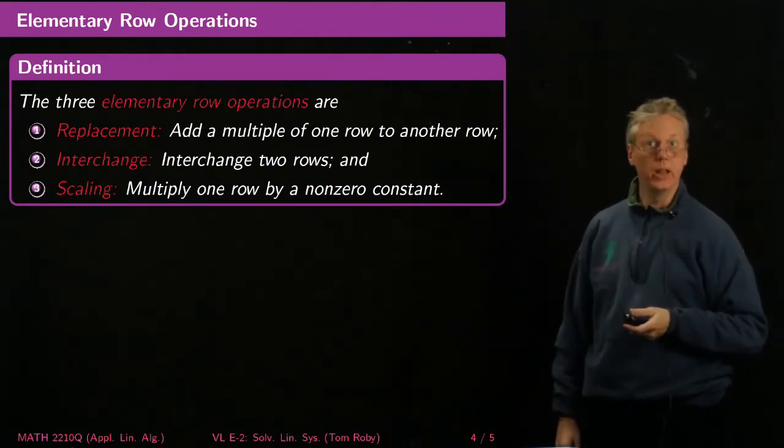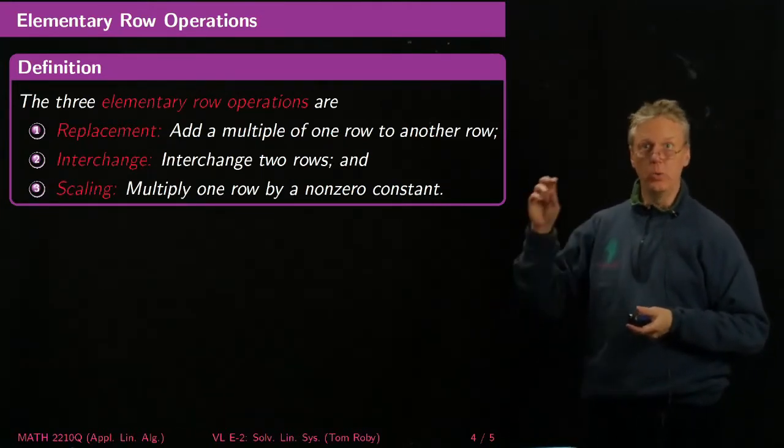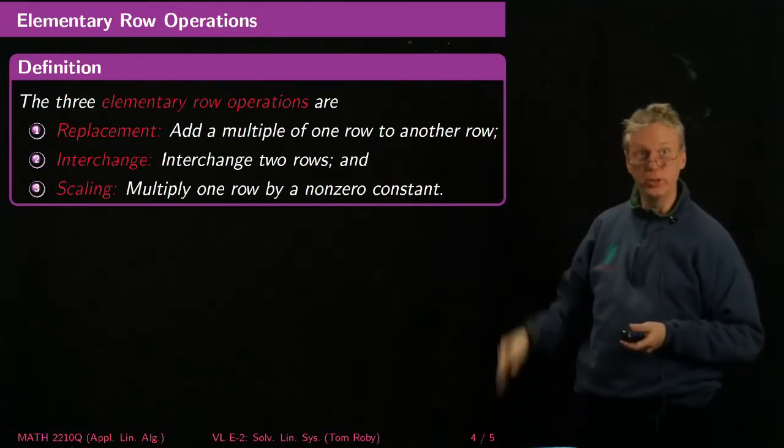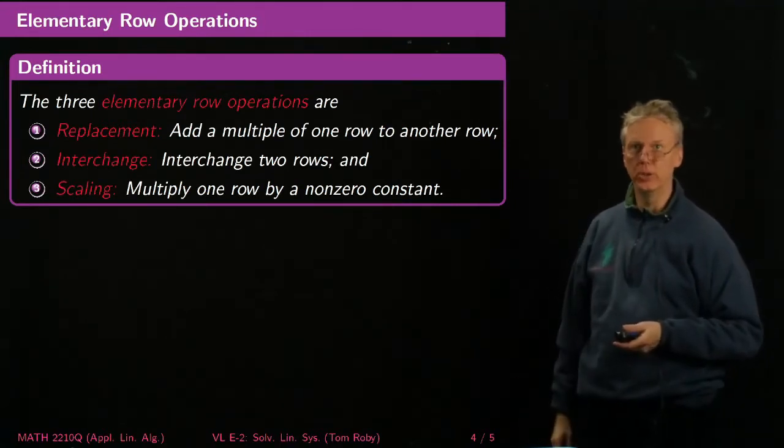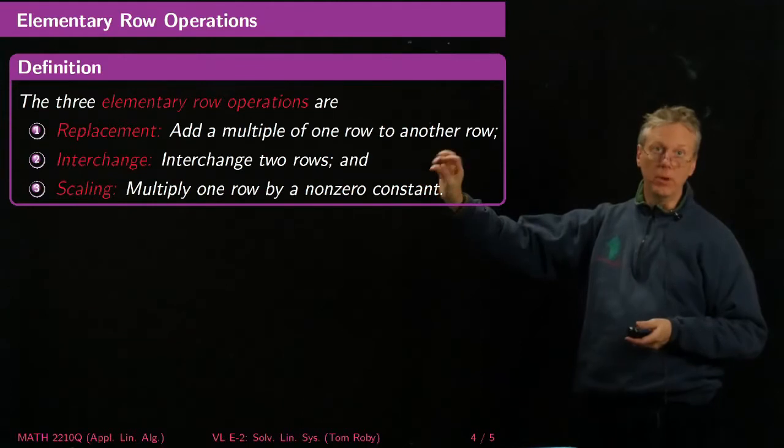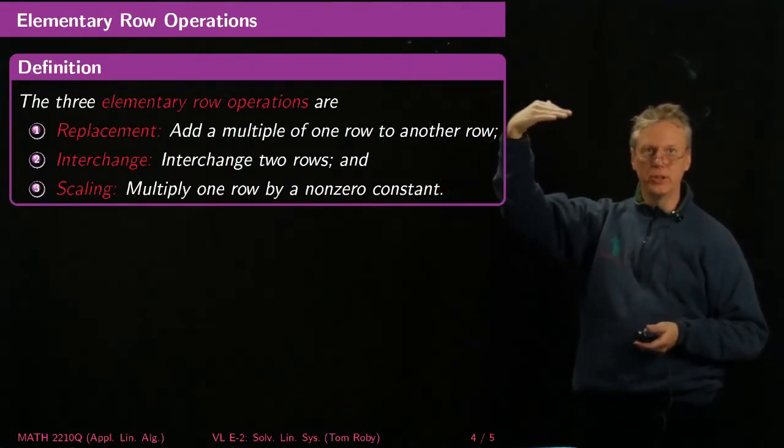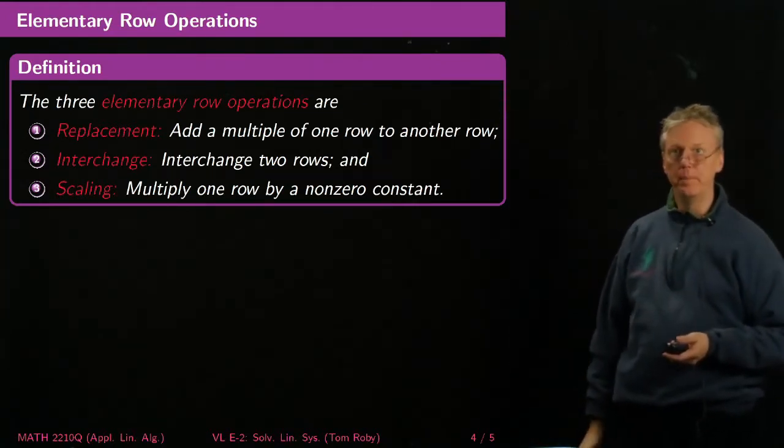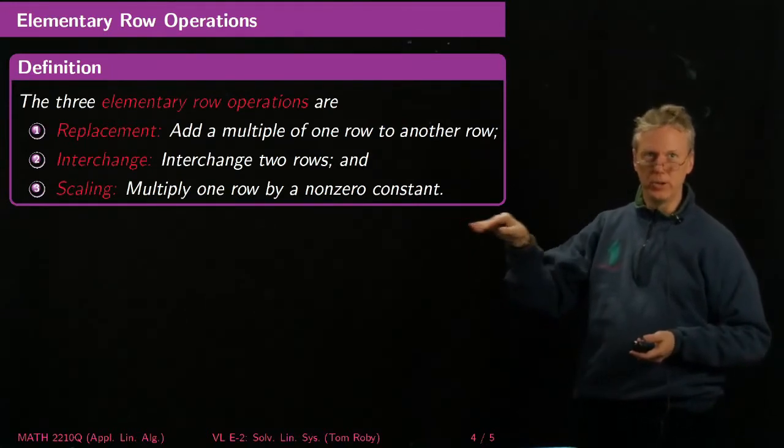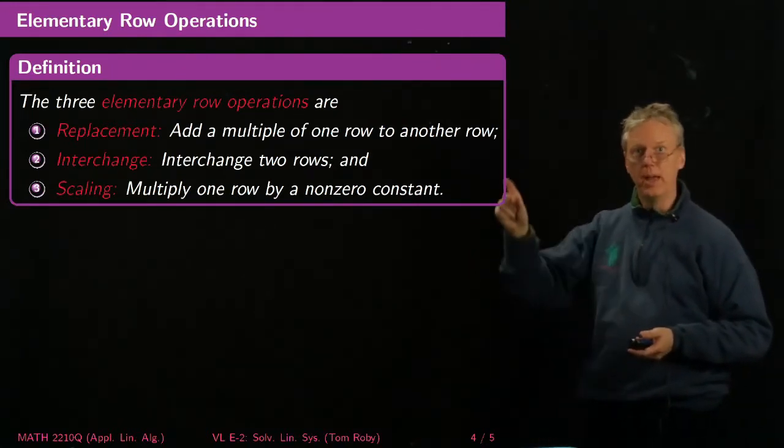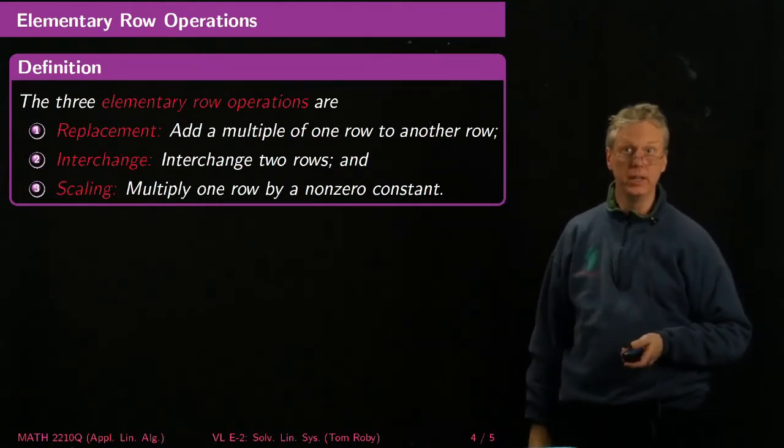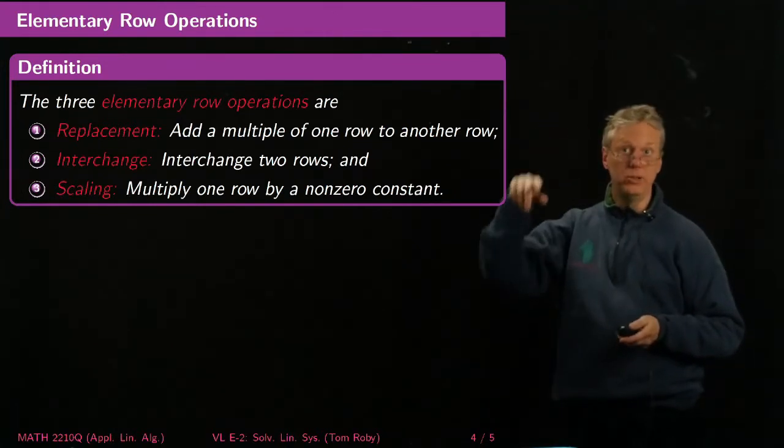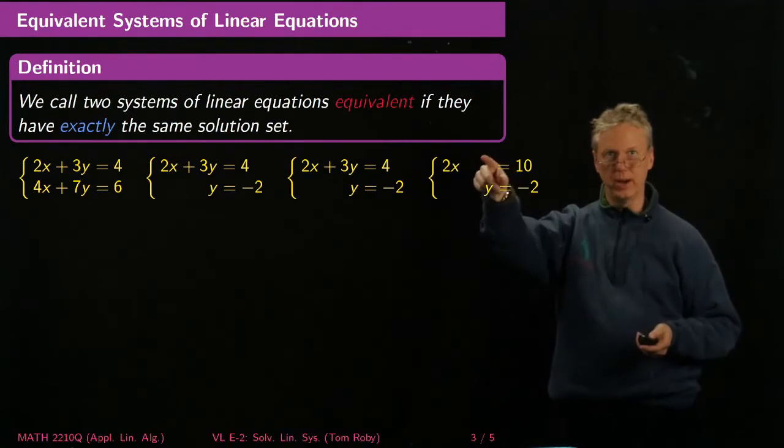So what are the three elementary row operations? One is that you can always add a multiple of one row to another row. That's the critical one that allows you to eliminate variables and plays a major role in the class. Interchanging two rows is useful too. It's just a way of making sure that the ones that are most easy to use for eliminating other rows go at the top and to make sure that you have the things that are mostly zeros, zero coefficients down at the bottom. And finally, multiplying one row by a non-zero constant is often useful, like dividing the 2x equals 10 by 2 to get x equals 5 in that last equation.